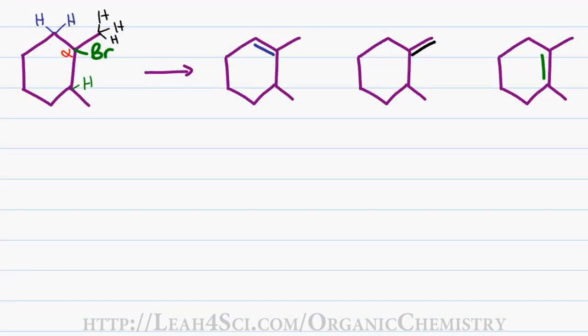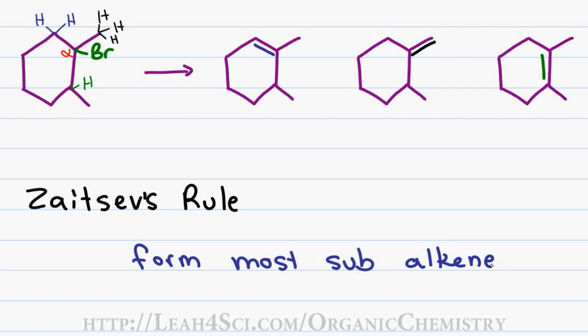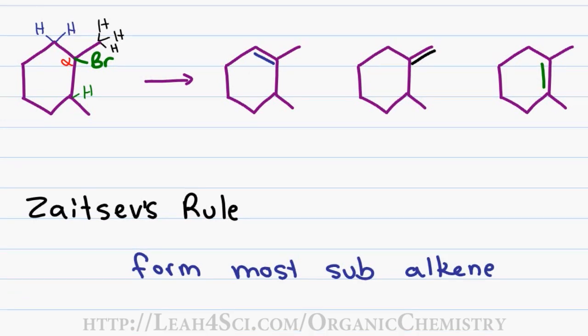If you can potentially have three different products, how do you determine which one is going to be the correct product? And if you can have more than one product, which is going to be the major and which is going to be the minor? To answer this question, we have to refer to Zaitsev's rule, which tells us that we're going to form the more substituted alkene as the major product. And since alkene substitution is directly related to alkene stability, what Zaitsev's rule is really telling you is that you have to form the most stable alkene.